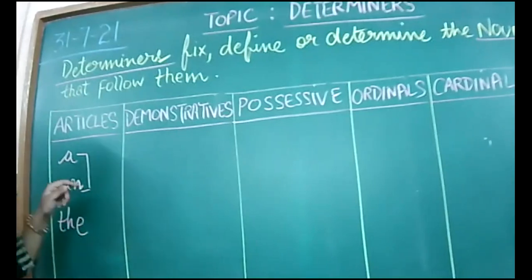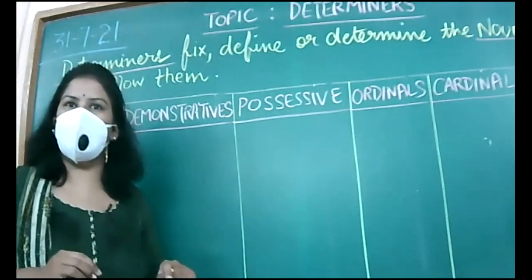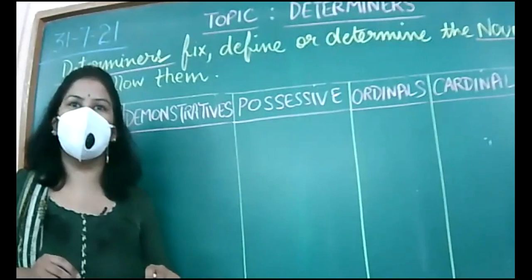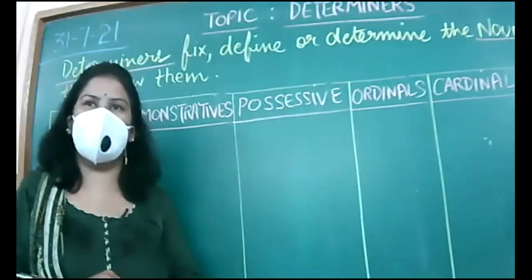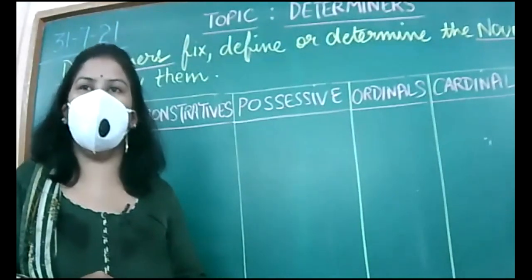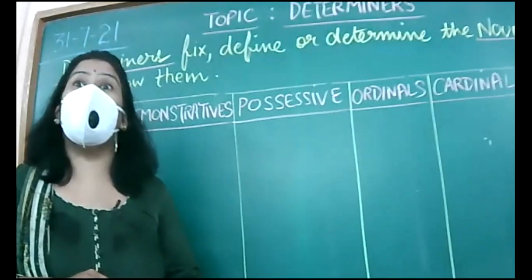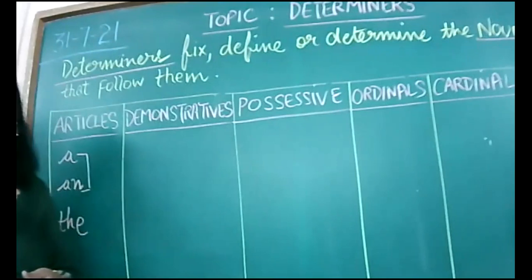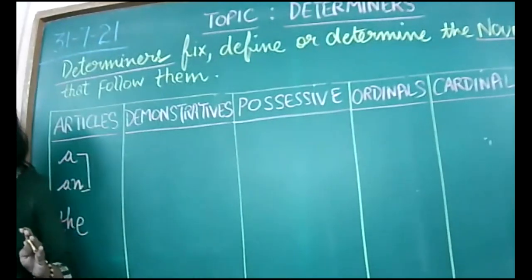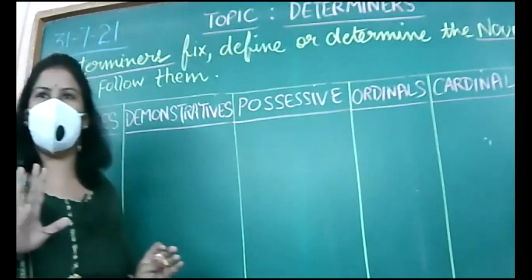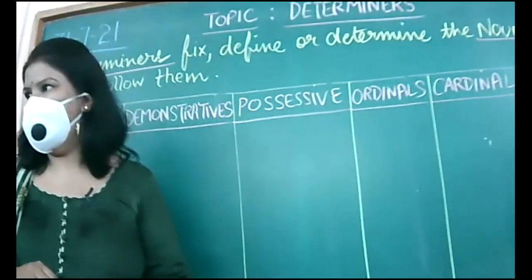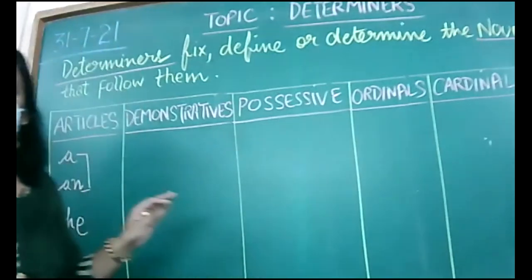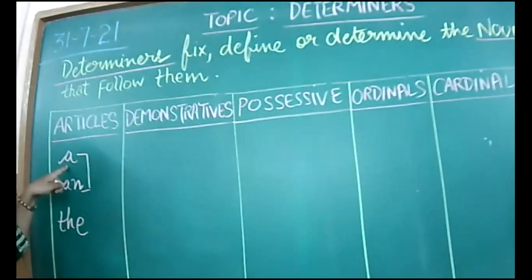Now what is the difference between 'a' and 'an'? Can anyone tell me where to use 'a' and where to use 'an'? There are 26 letters in English — five vowels: a, e, i, o, u; the rest 21 are consonants. When a consonant sound is there, we use 'a.' When a vowel sound is there, we use 'an.'